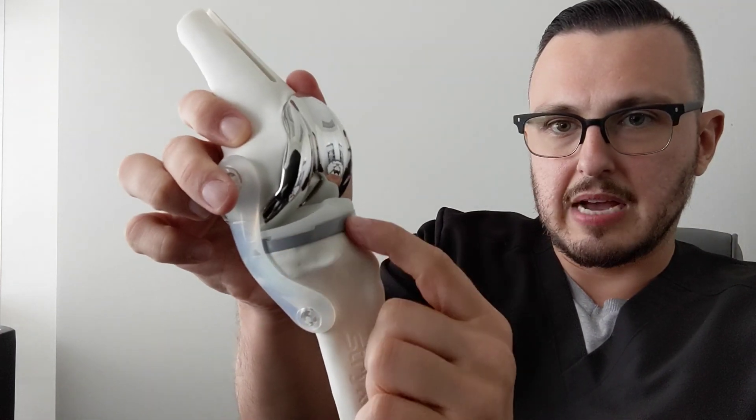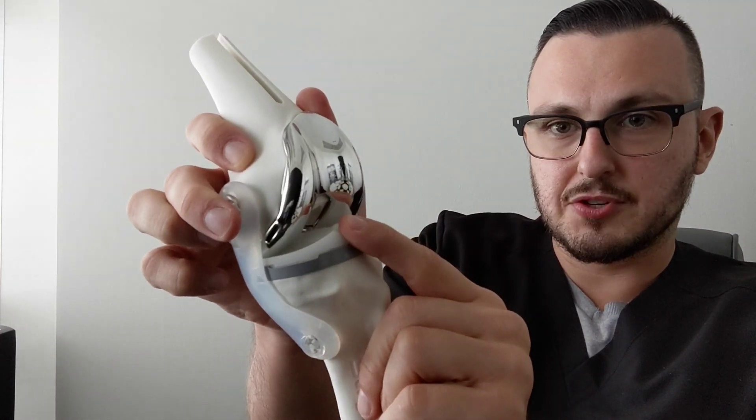So a knee replacement is you have the metal component on the femur, which is your thigh bone, and then you have the metal component on the tibia and then a plastic spacer in between the two where the articulation occurs.